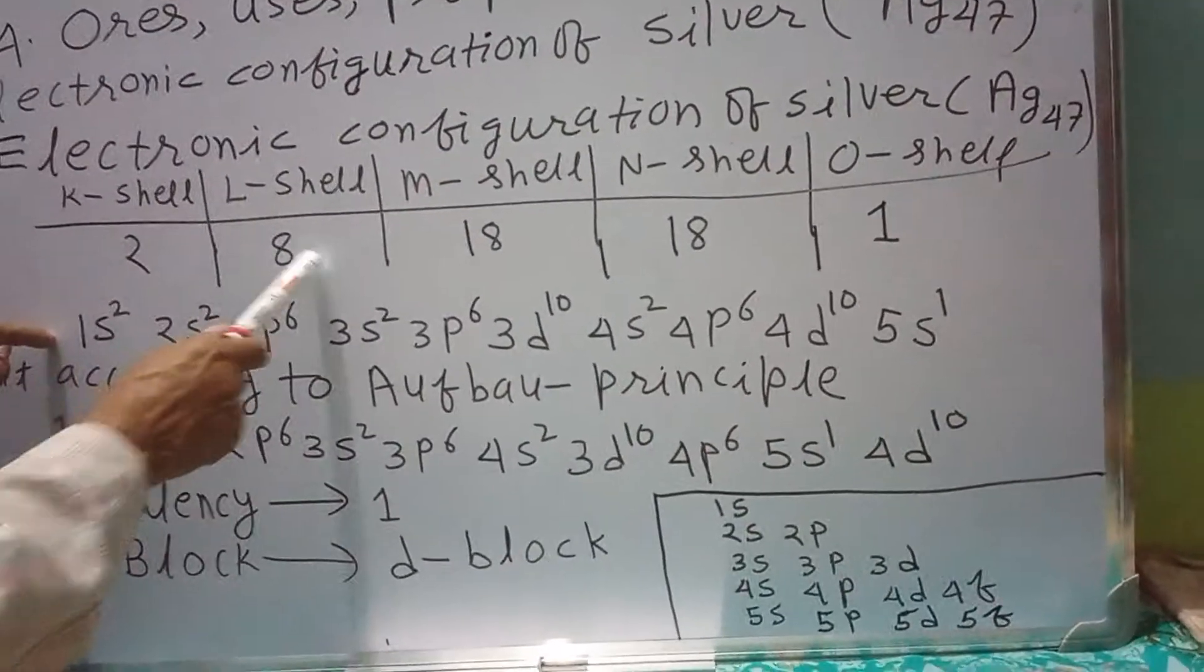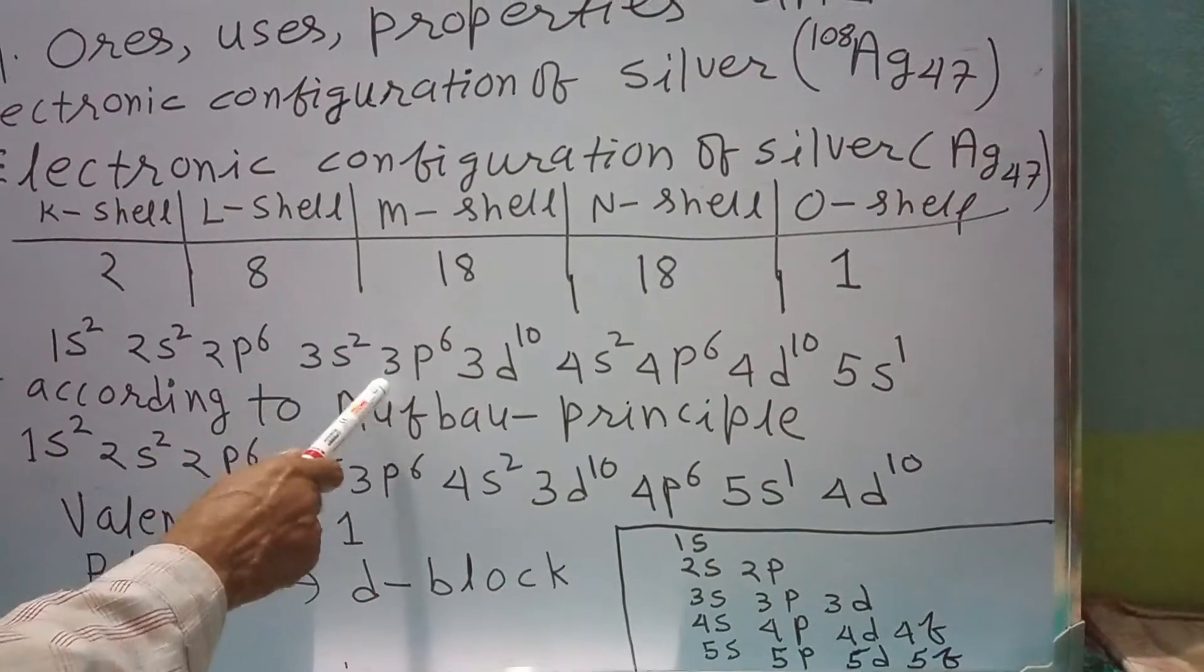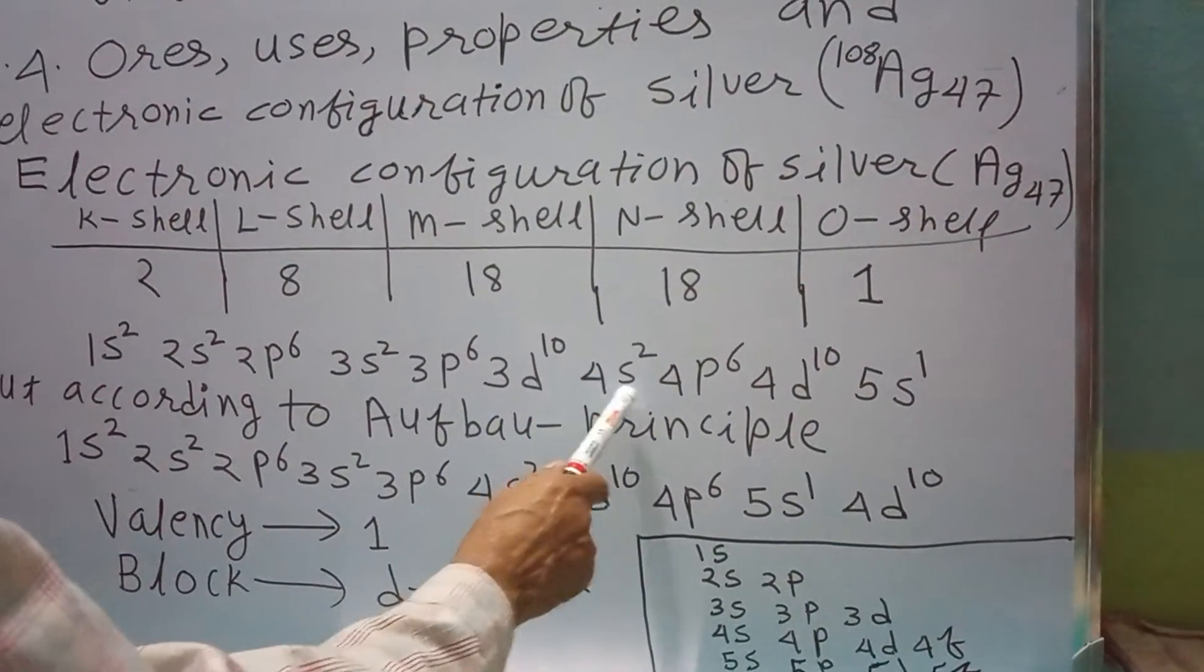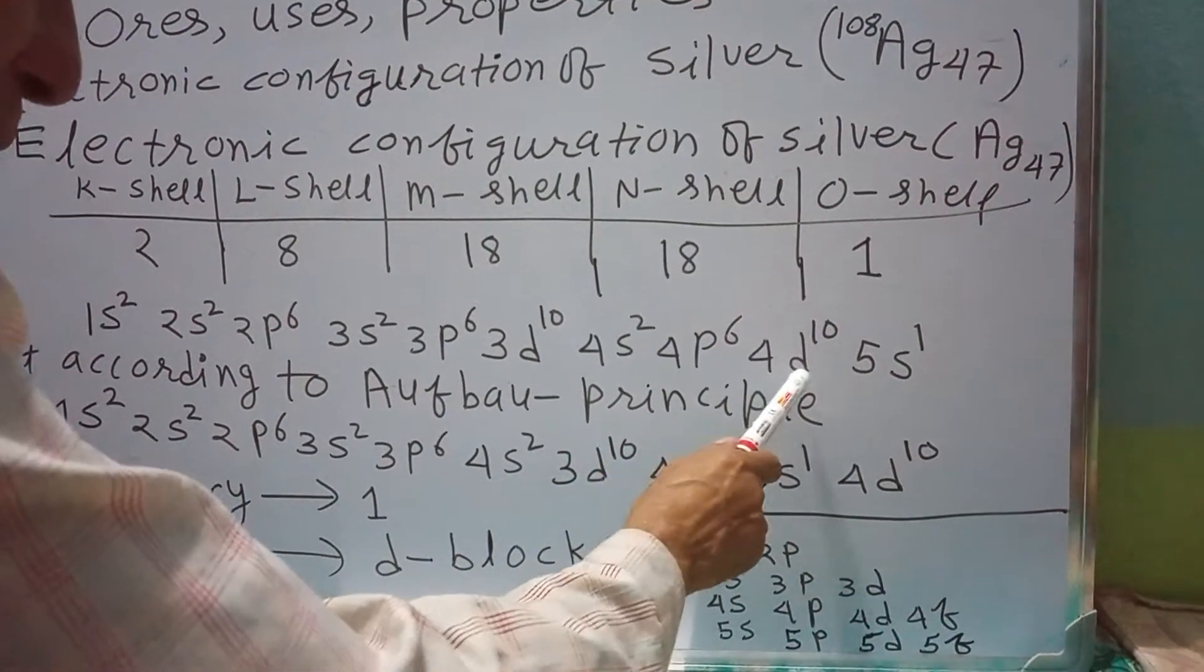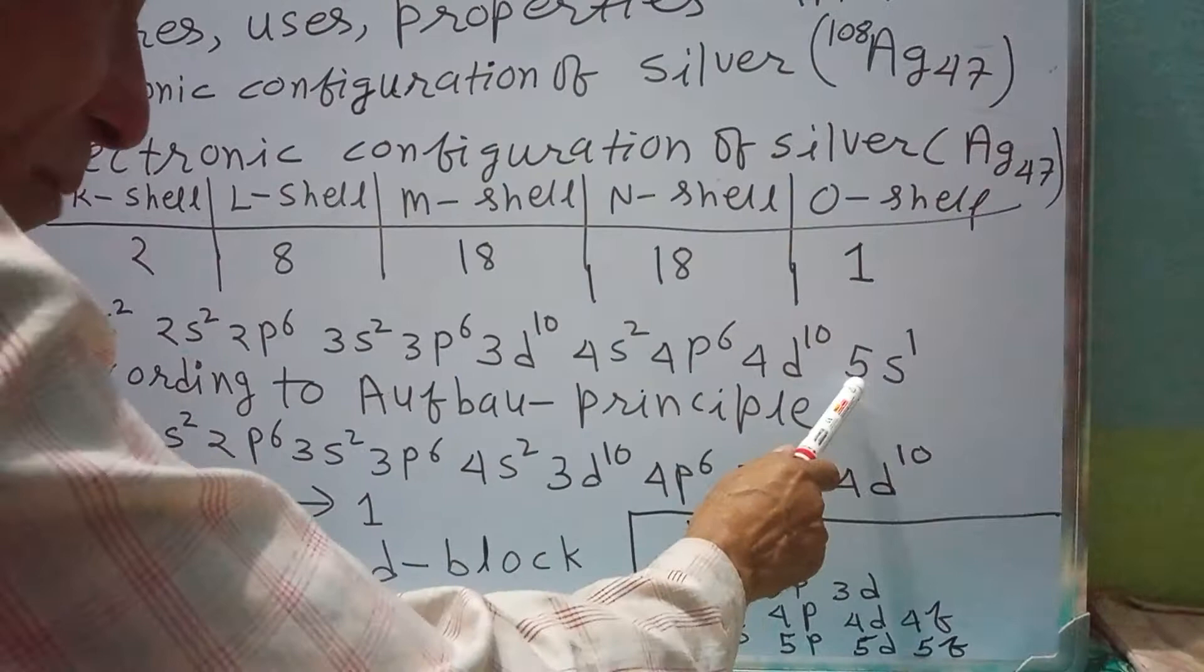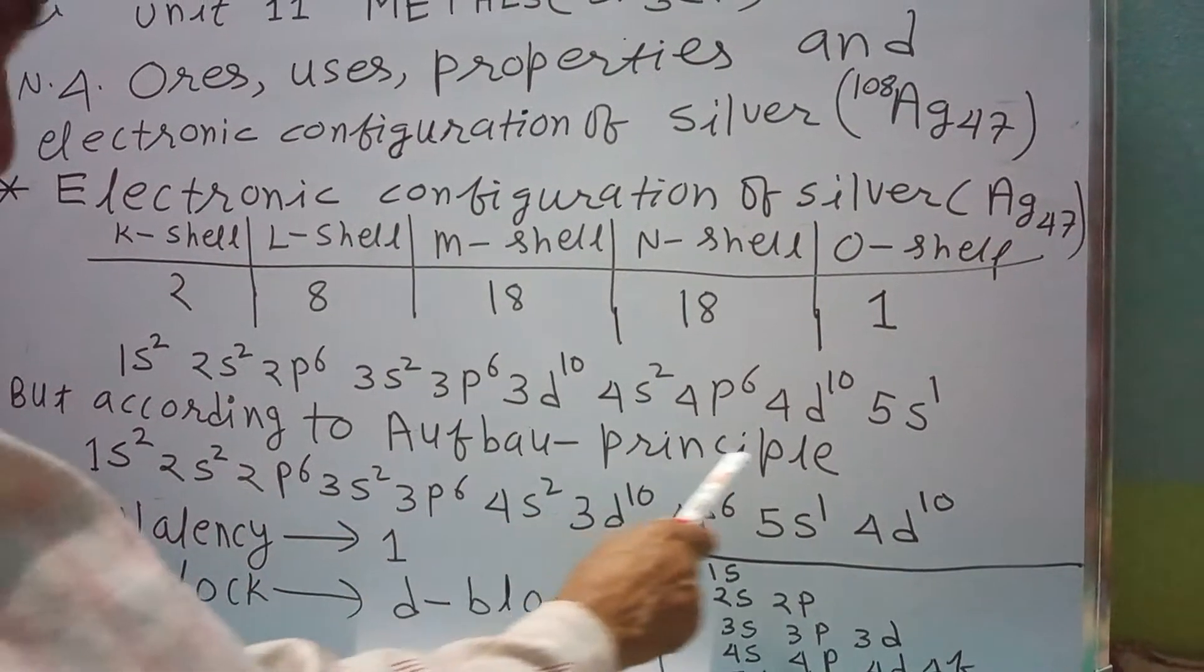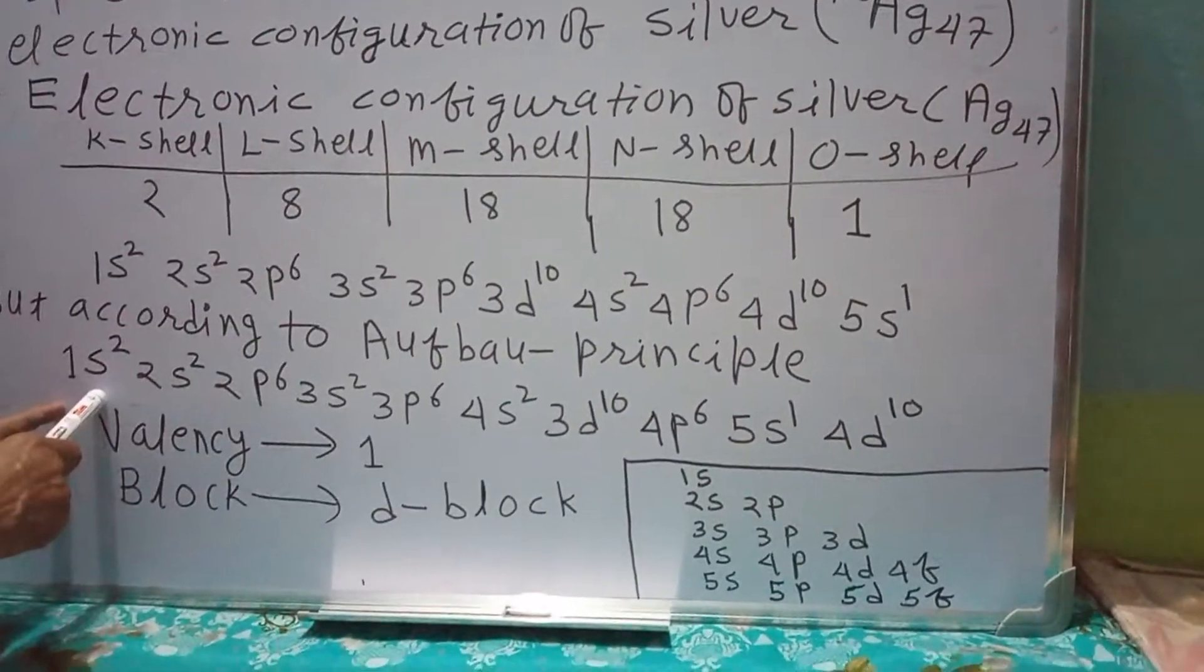Here 2, 1s² 8, 2s² 2p⁶ 18, 3s² 3p⁶ 3d¹⁰ 18, 4s² 4p⁶ 4d¹⁰. This 1 is 5s¹.